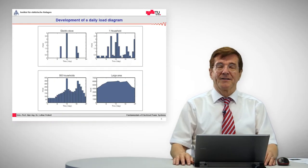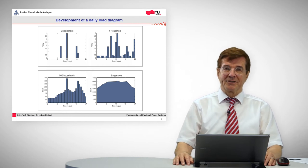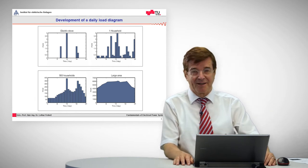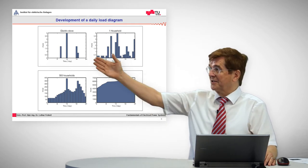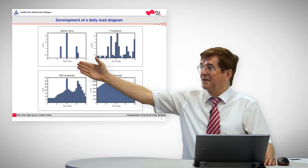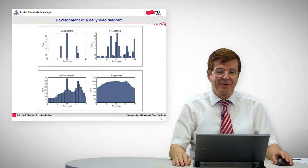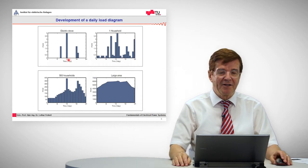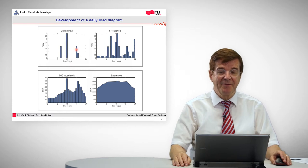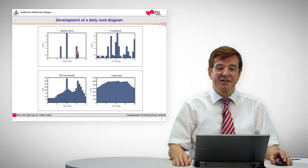To understand the superposition of electrical loads better, one can start with electrical consumption in a household which starts in the morning when the electric stove is switched on to prepare the breakfast. Then we have a high peak of electrical consumption at lunchtime and some electrical consumption in the evening.